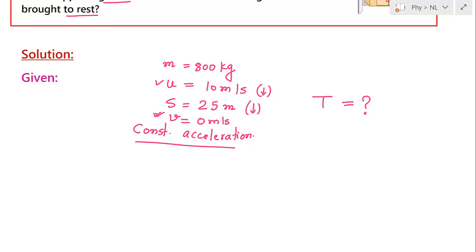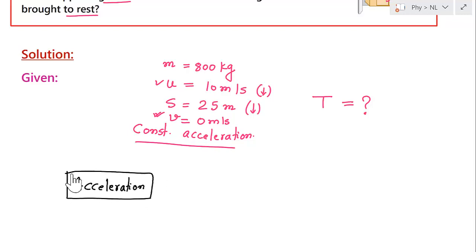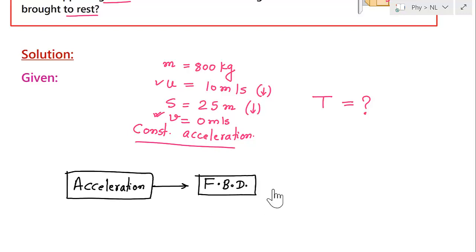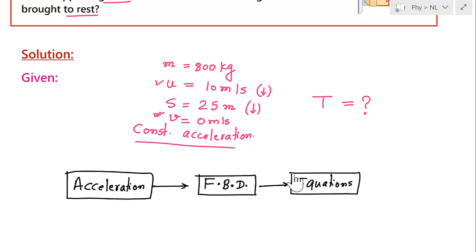What is the flowchart for solving this problem? First, calculate acceleration. Once you know the acceleration, draw the free body diagram — in this case, the free body diagram of the elevator. Then use Newton's second law to write equations. We will have equations in the x and y directions, but the x direction is not useful here. So we write one equation in the y direction and solve for the target variable.